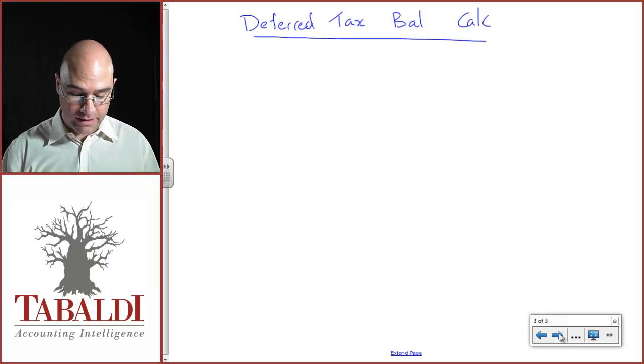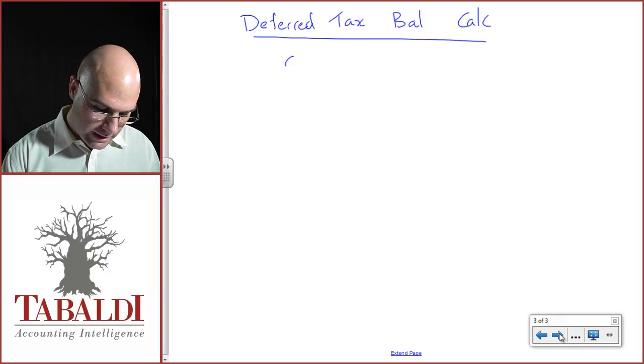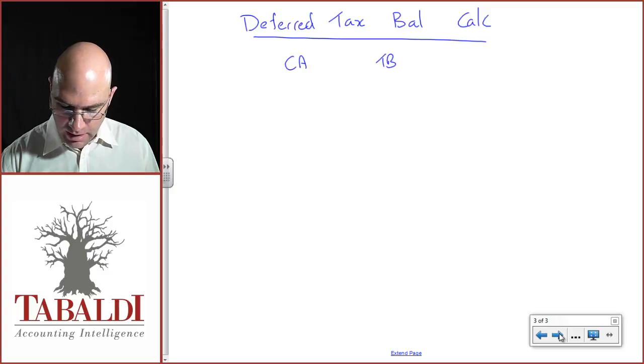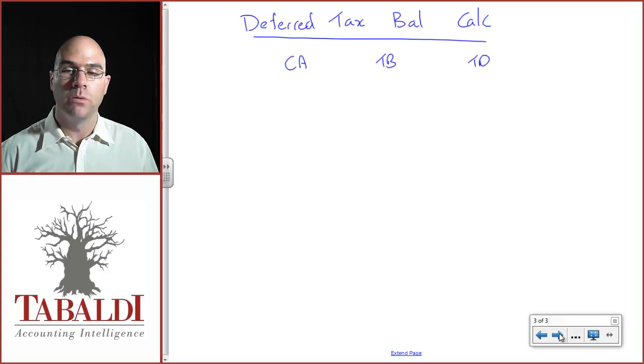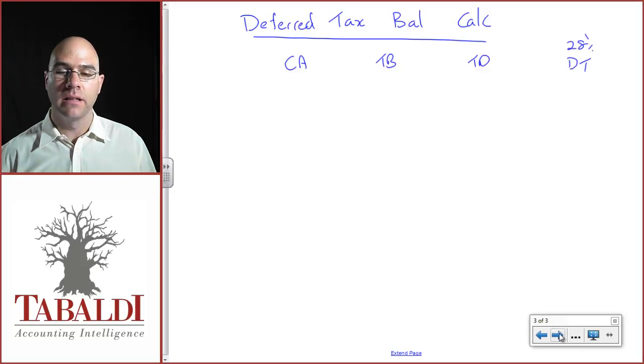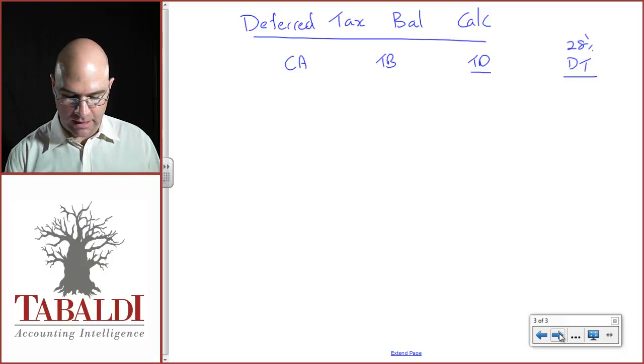With a statement of financial position calc, I'm going to do my normal headings: the carrying amounts, the future economic benefits, the tax base, any future tax deductions. The difference between the two would be my taxable or deductible temporary difference, and that temporary difference will give rise to a deferred tax balance at a 28% tax rate.